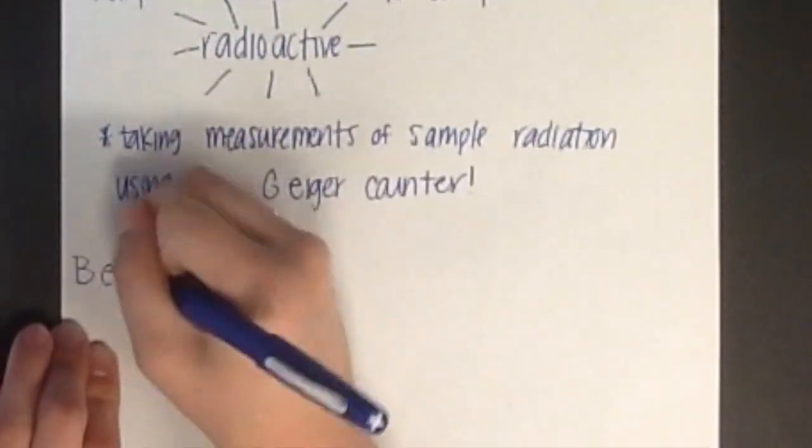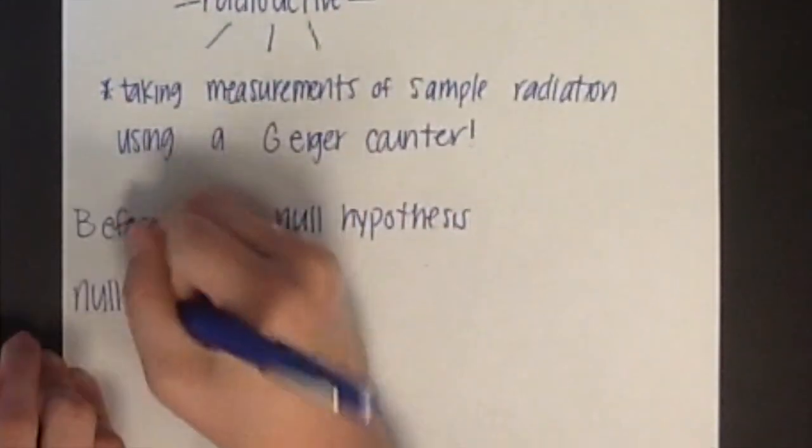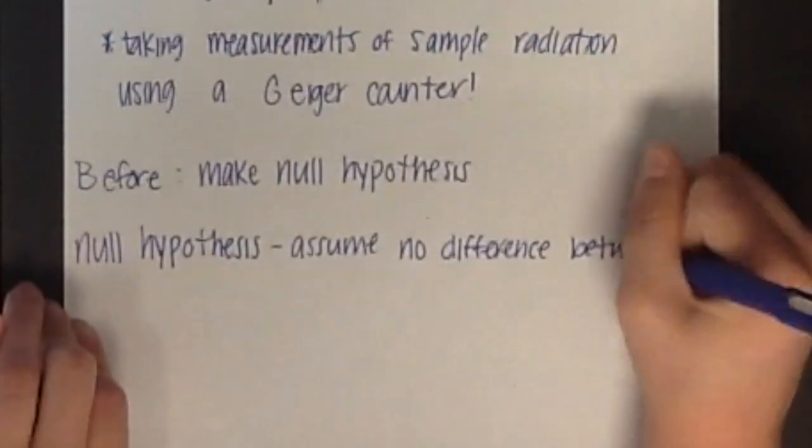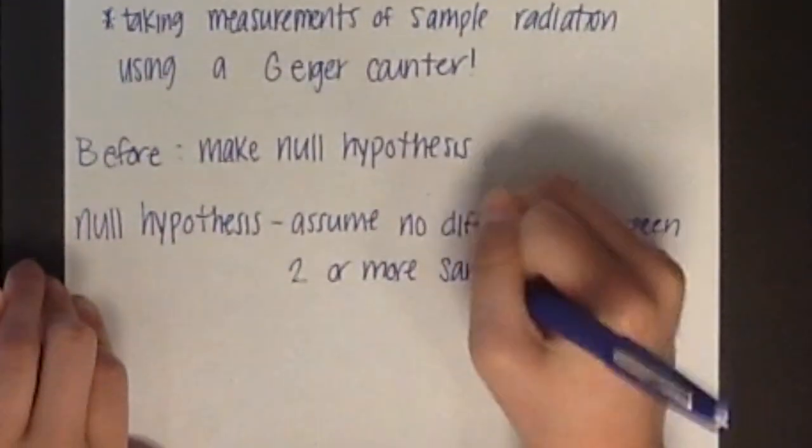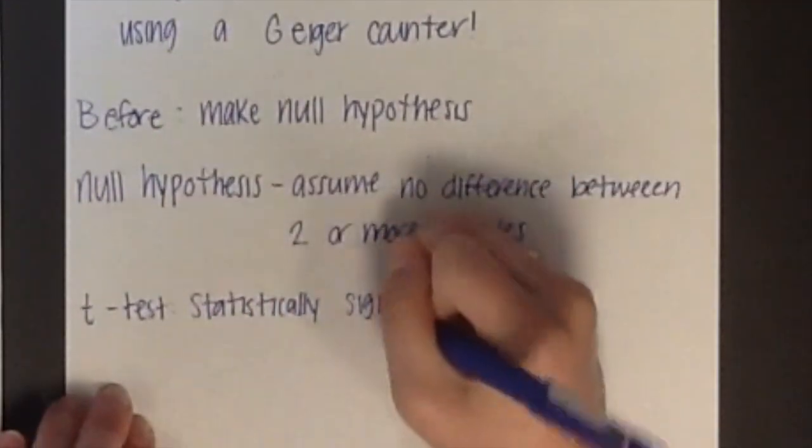Before beginning this experiment, write a null hypothesis. A null hypothesis is when you assume no difference between two or more samples. After all of your samples have been measured, a t-test will be used to determine whether or not there is a statistically significant difference between the means.